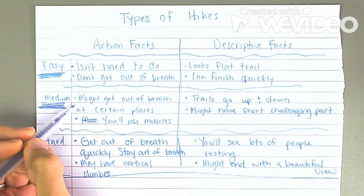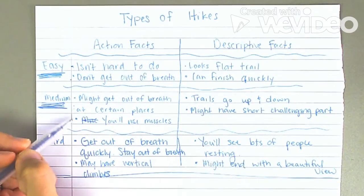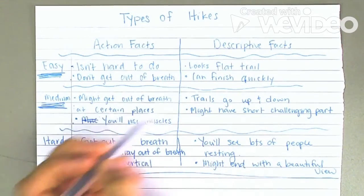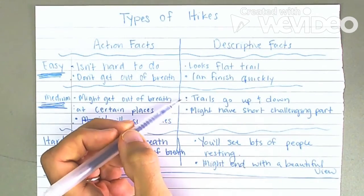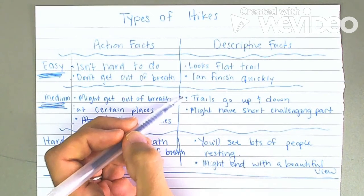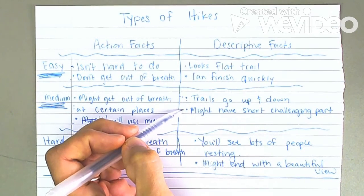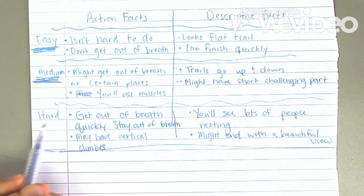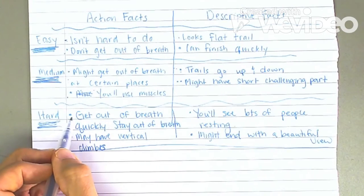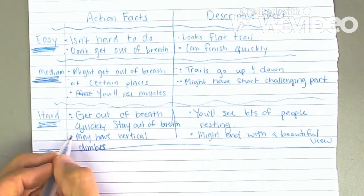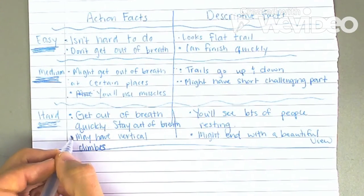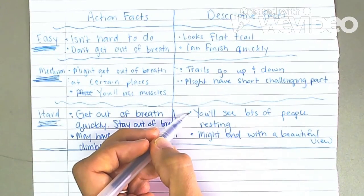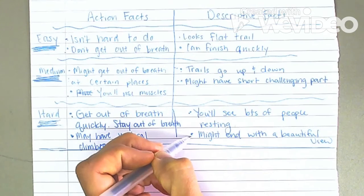Then there's medium hikes — you might get out of breath at certain places and you will use your muscles, so those are the action facts. The descriptive facts are that the trails might go up and down and there might be a short challenging part. Then for hard hikes: you get out of breath quickly and stay out of breath, and you might have to do vertical climbs — those are actions. Descriptively, you'll see lots of people resting, and it might end with a beautiful view.